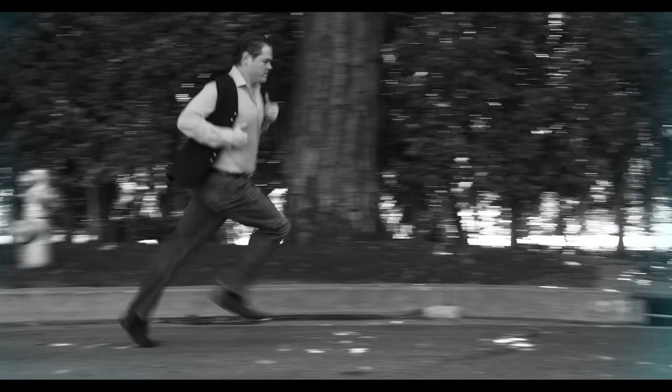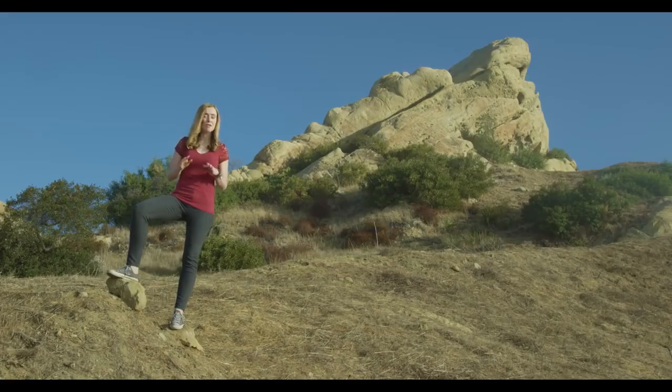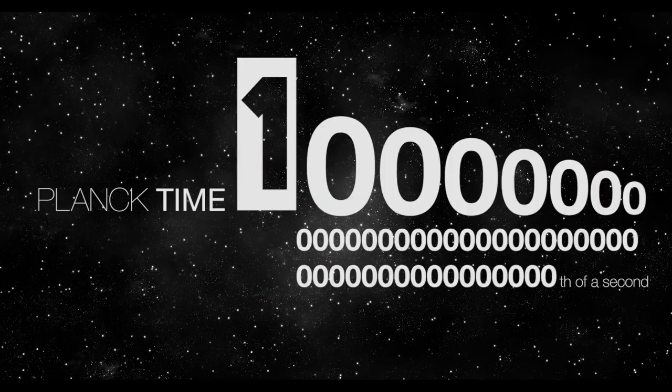In a movie shot on 35mm film, there are 24 frames a second. There is no actual movement in a movie — there is just a sequence of frozen frames. Now remember the Planck length of space, the smallest length possible? Well there is also a Planck length of time, and it is much shorter than 24 frames a second — in fact, it's 10 to the 44 times shorter than a second.